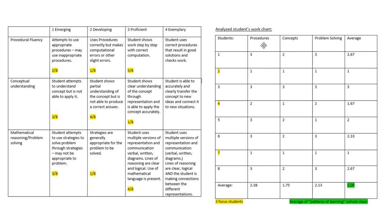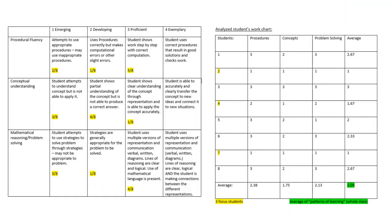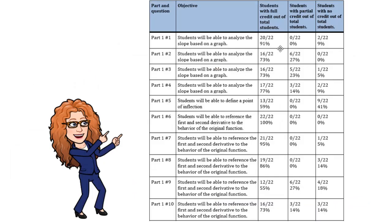Here's a student from last semester who was a secondary math pre-service educator. They have the question number, the objective, and then full credit, partial credit, no credit, with fractions and percentages of the students who achieve those. As a math teacher, that just makes my heart happy. I would recommend starting with your evaluation criteria, then modifying it — deleting the criteria detail and just sticking with the fractions and the percents.